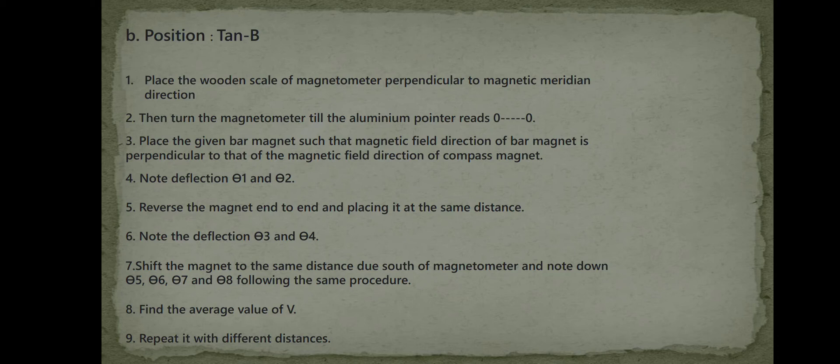Shift the magnet to the same distance due south of the magnetometer and note down theta 5, theta 6, theta 7, and theta 8 following the same procedure. Find the average value of theta. Repeat with different distances.